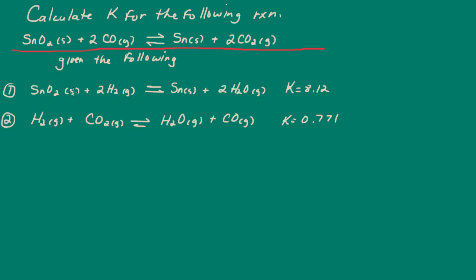We're told to calculate K from this information right here. So the whole idea here is we want to manipulate these two equations so that when we add them, we obtain our overall equation.